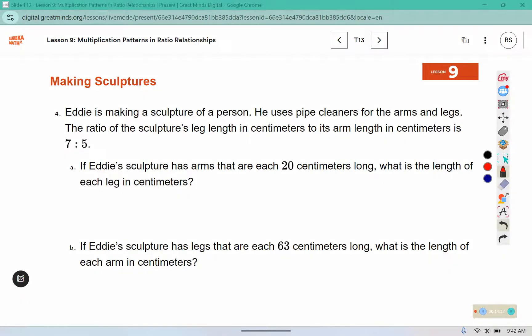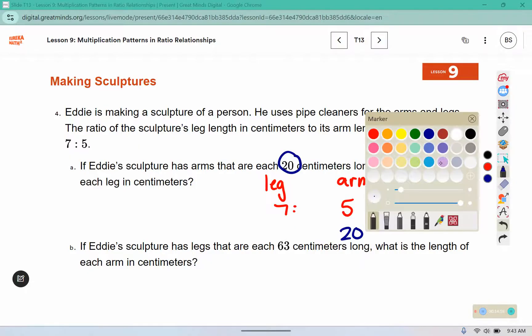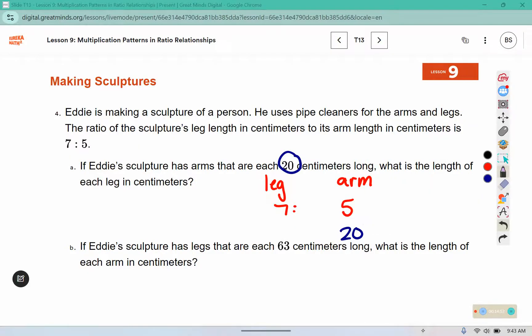For these, I like to start with the ratio. We had the leg length and the arm length in a ratio of 7 to 5. And I want to turn it into an arm length of 20. So what do I multiply by to get 20?